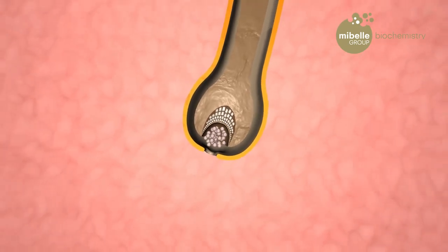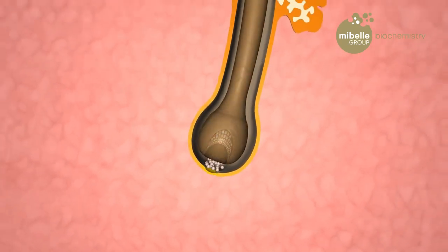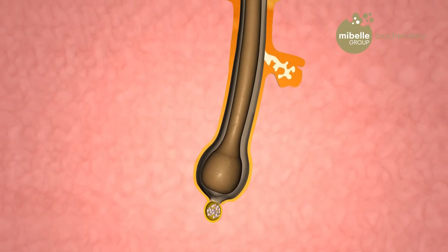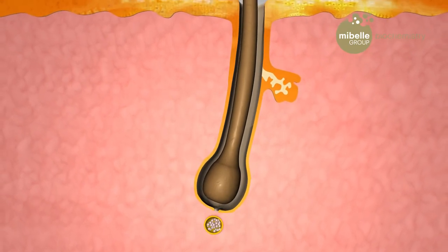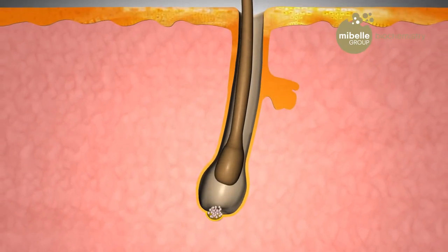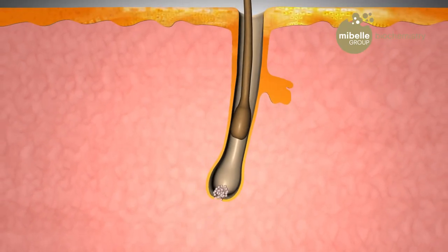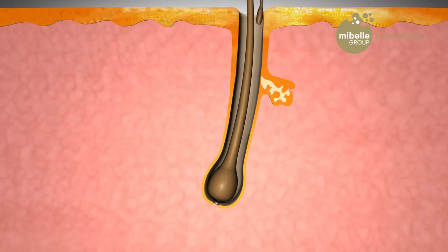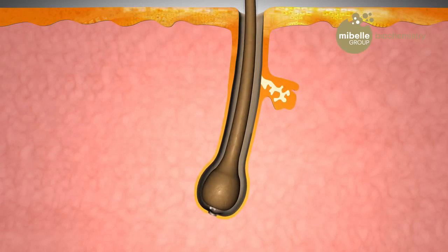The growing phase, anagen, is followed by the regression stage catagen, to end at the resting period telogen, where the hair follicle re-enters the anagen phase.